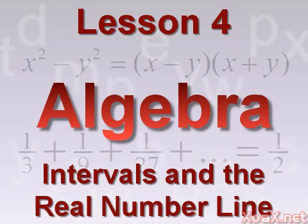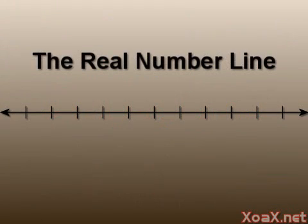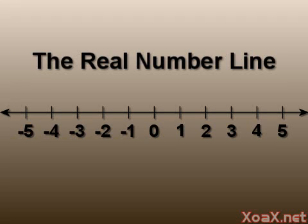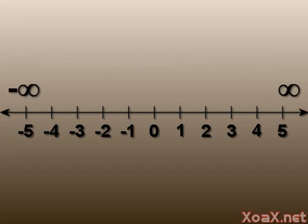Lesson four: intervals in the real number line. The real number line is a representation of the real numbers. Typically we begin at some number like zero and extend a line out to the left and to the right, and add some more numbers to indicate the scale. We put arrows on the left and the right to indicate that the line extends out to negative infinity and positive infinity.